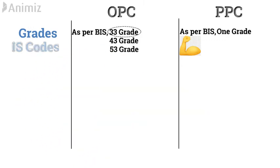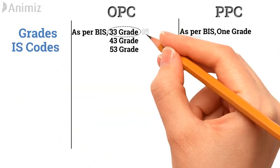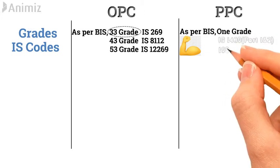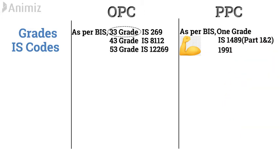IS Codes: The IS code used for OPC 33 grade cement is IS 269. For 43 grade cement, IS 8112 is used, and for 53 grade, IS 12269 is used. Whereas, the IS code used for PPC is IS 1489 Part 1 and 2, 1991.